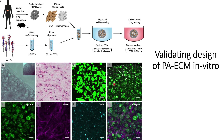This co-culture included PDAC plus primary stromal cells with the custom ECM. After that, they checked EpCAM signals, which are shown here in green. The EpCAM signals were found to be abundant, and EpCAM is one of the established markers for pancreatic cancer cells.